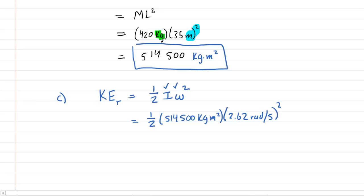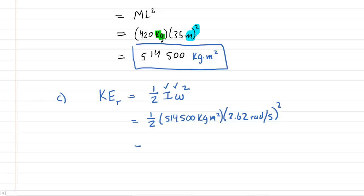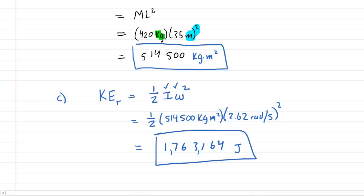We'll punch this into our calculators and get the correct answer for the kinetic energy of this spinning propeller. It turns out to be a rather large number: 1,763,164 — approximately 1.8 million joules of rotational kinetic energy. That is the answer to part C.